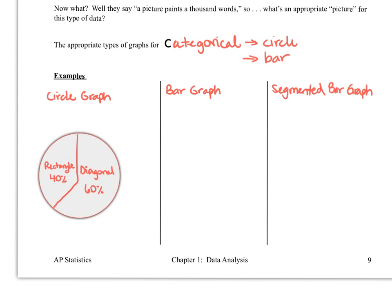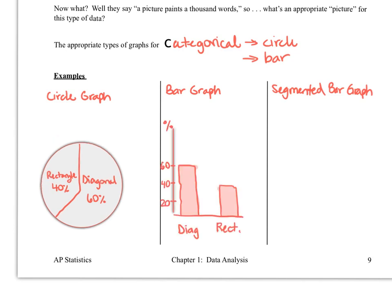Pause the video and try to draw the bar graph now. Here's a look at what the bar graph would look like. So we're representing 60% diagonal, 40% rectangular. And again, this is with the relative frequency, and it could just be with the counts. The shape is going to be the same either way, just FYI.